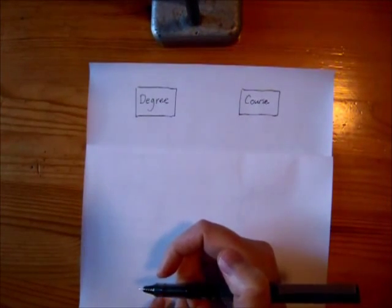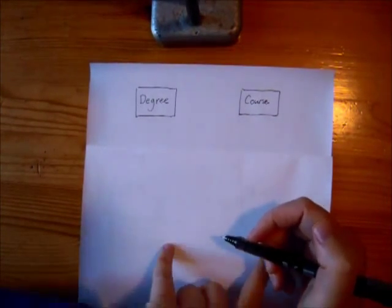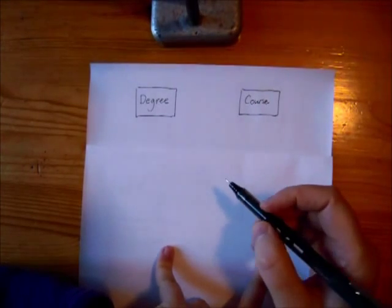A few words on aggregation and composition. These are both particular kinds of association in UML.